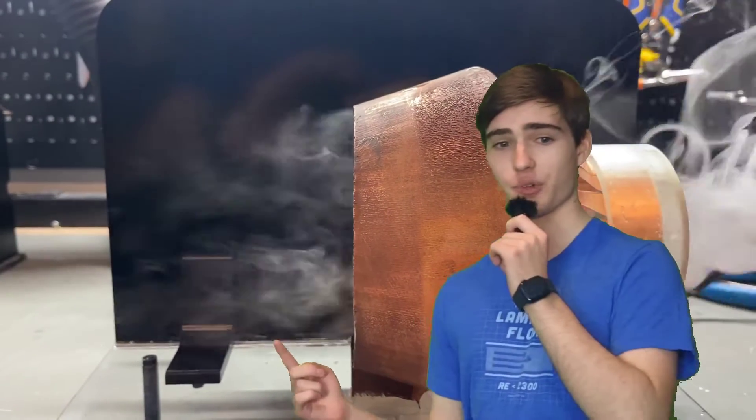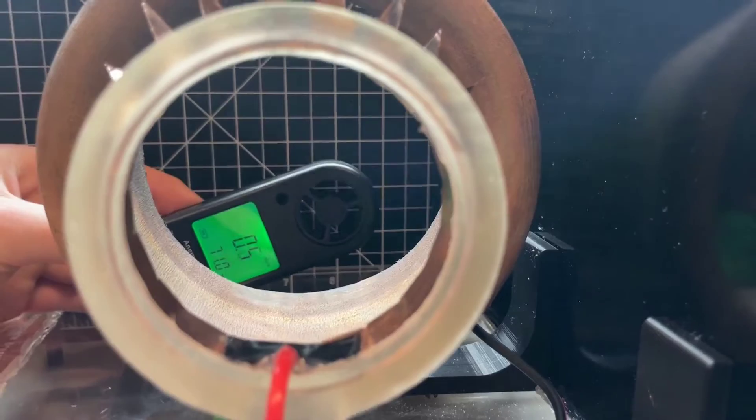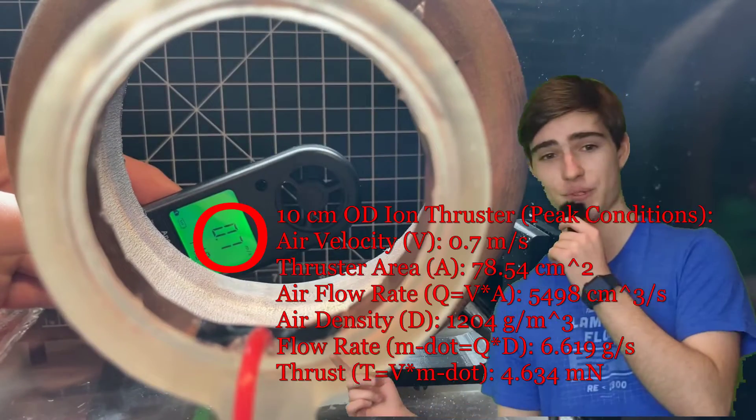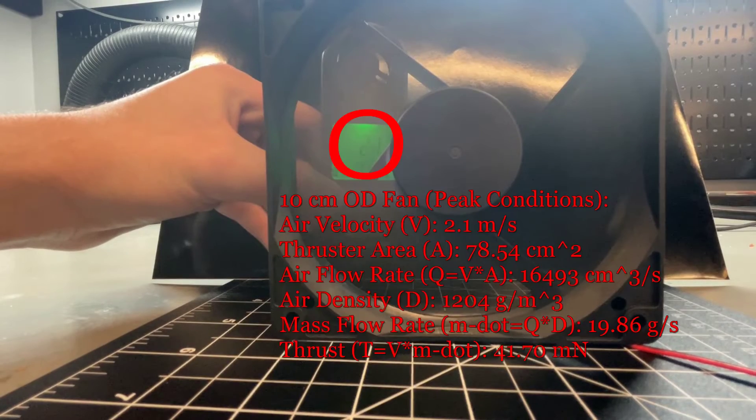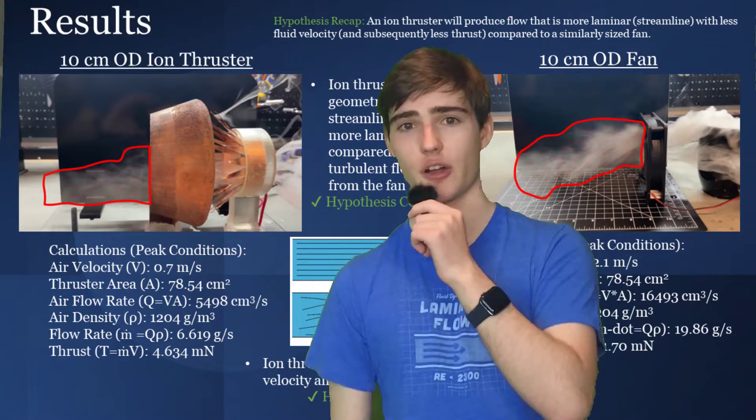Check it out. That flow is pretty laminar. Check out these numbers. And we got the results we expected with the fan, with turbulent flow and a higher velocity with subsequently more thrust. And as you can see here, our hypothesis was correct.